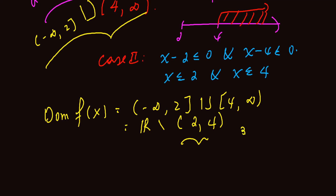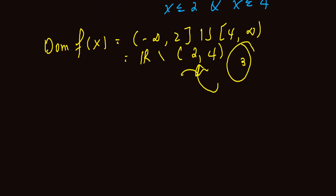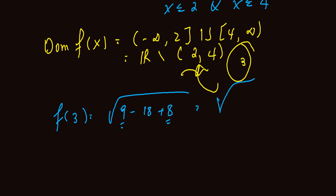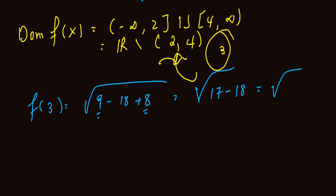To verify, f of 3 equals the square root of 3 squared minus 6 times 3 plus 8, which is square root of 9 minus 18 plus 8. The sum gives us square root of negative 1. Since a negative is not allowed under the square root, this interval from 2 to 4 is excluded. That's why this interval is restricted.